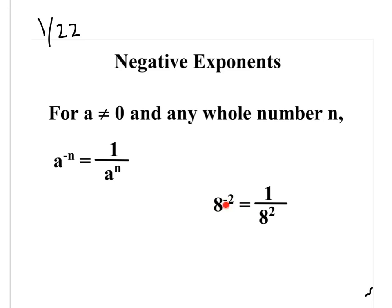So here we have 8 to the negative 2. To get rid of the negative squared, I just flip it. I put 8 squared on bottom. I write it over 1 and write this on bottom.